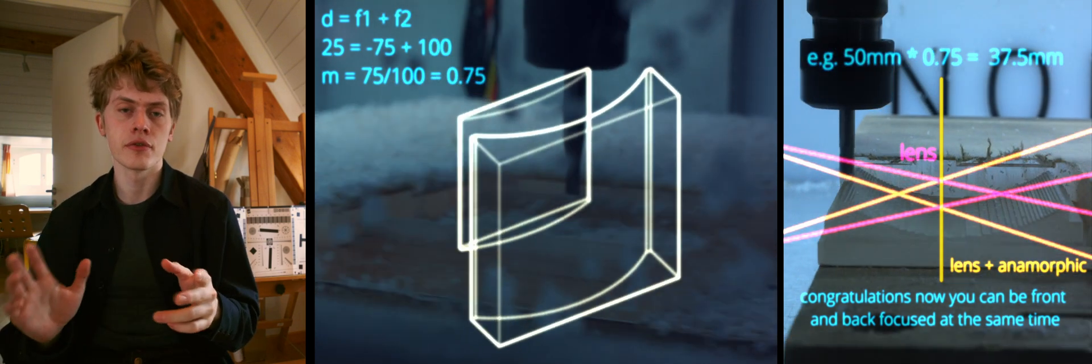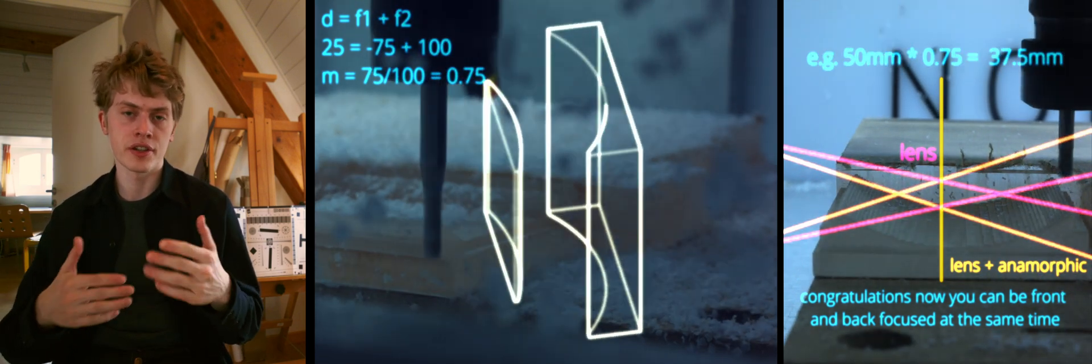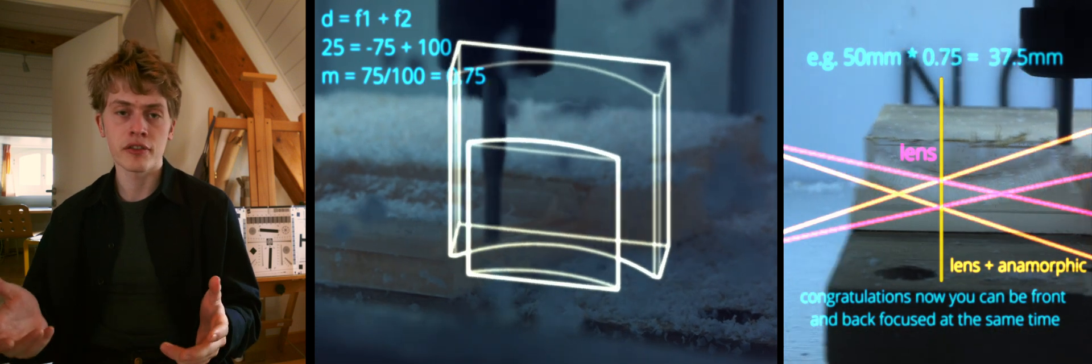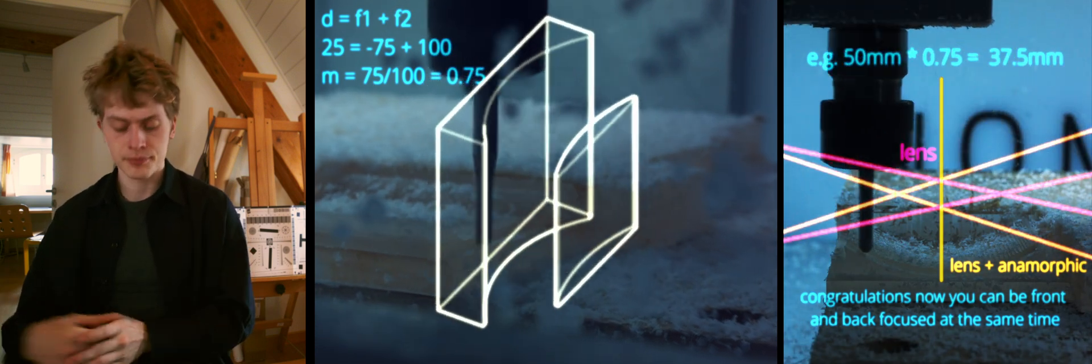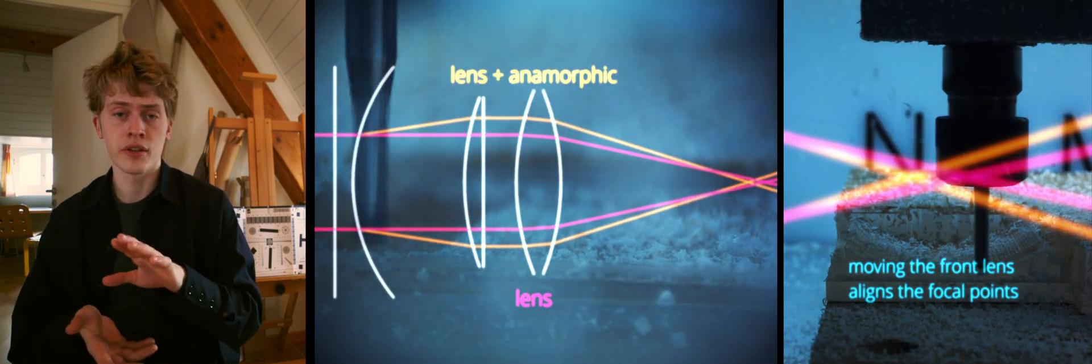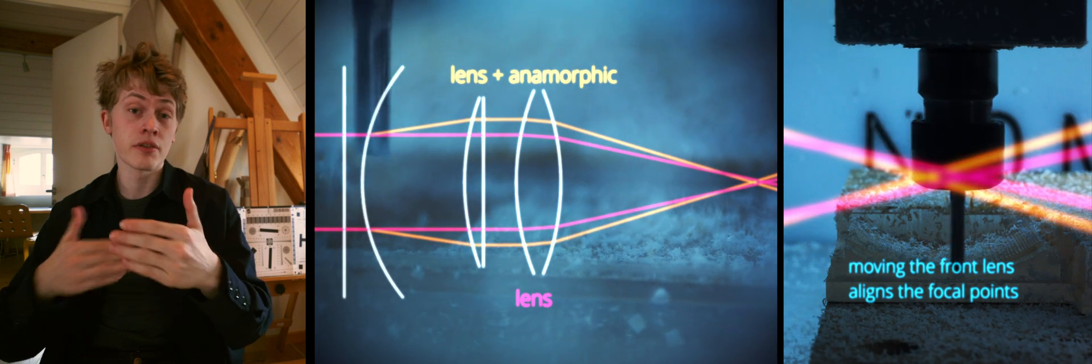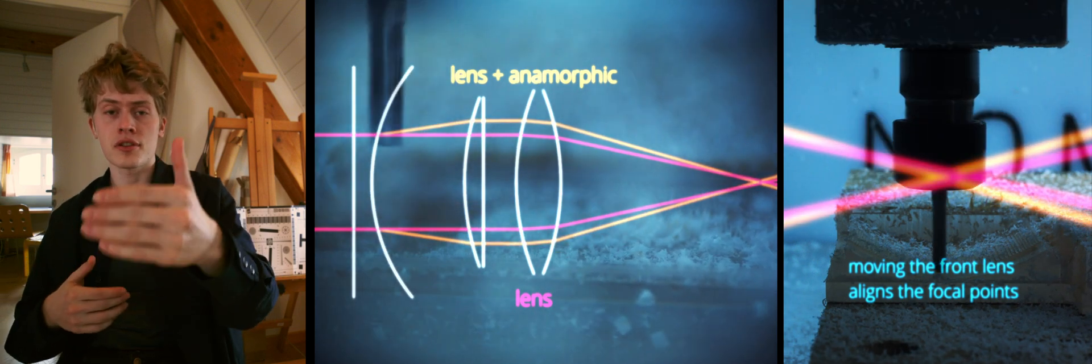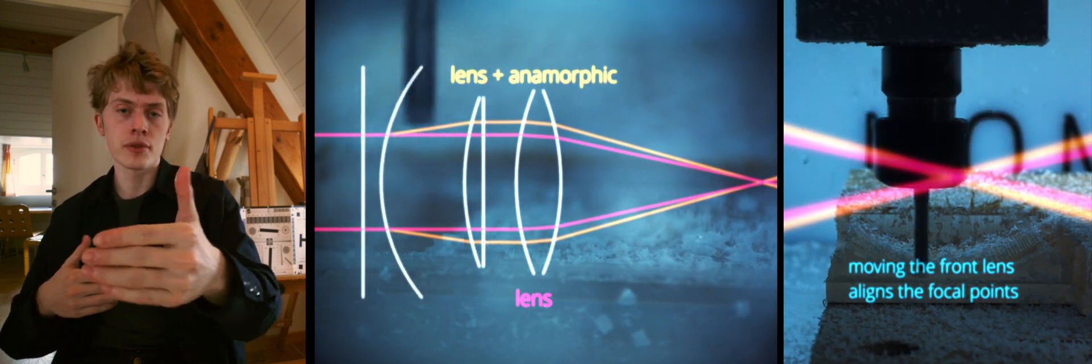This approximation is usually fine for viewfinders, where your eye can accommodate for the difference, but when you're taking a photo through it, you'll want to be a bit more precise. Additionally, an issue inherent in anamorphics is that you now have different horizontal and vertical focal lengths. This means that you're effectively focused at two different points, and so you'll have to adjust the front element to bring those two together.